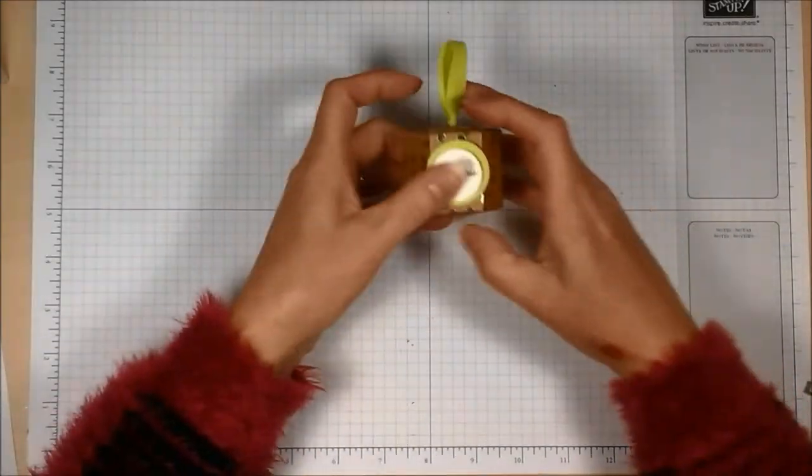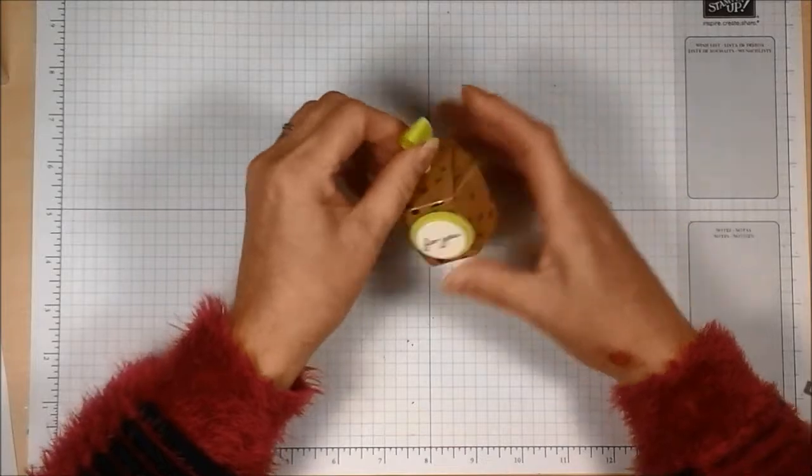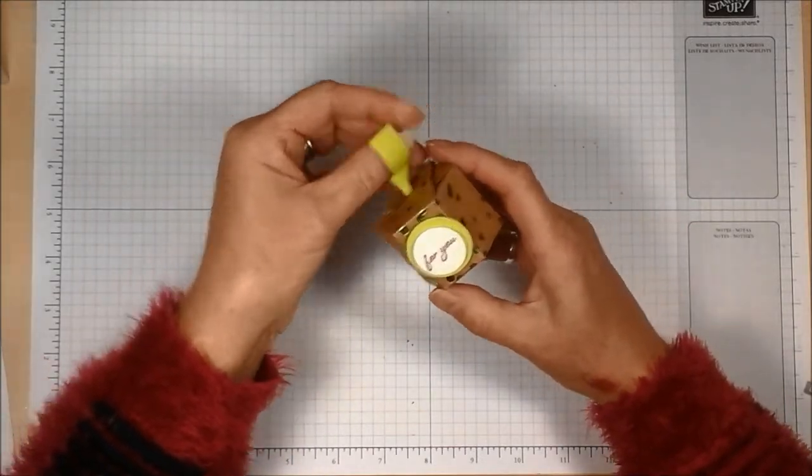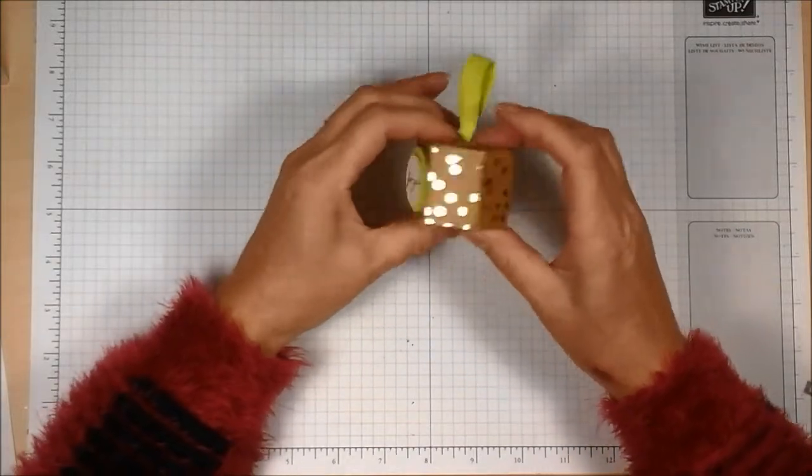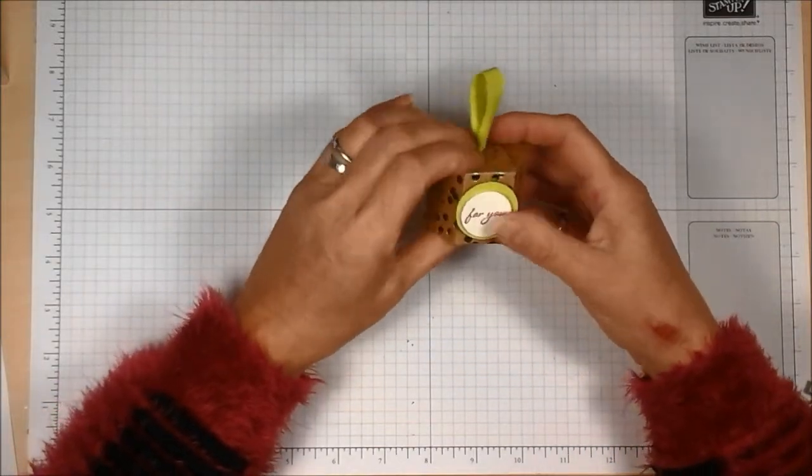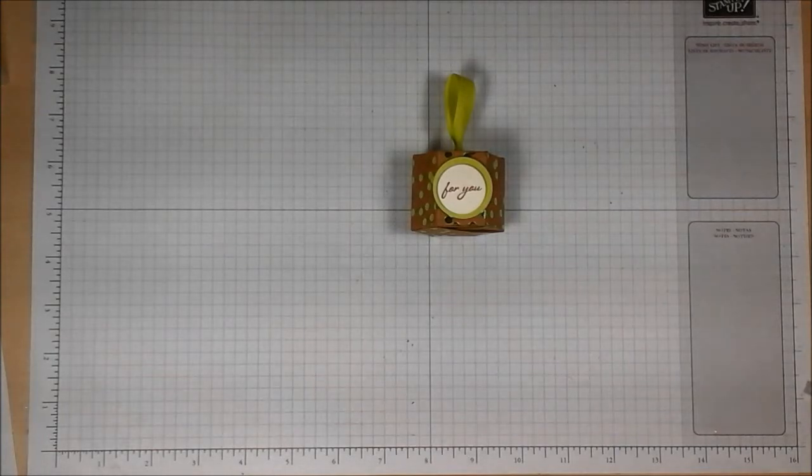And there we have it. A little hexagonal box held closed by the ribbon that's holding it up. That can be used to hang on a tree. And it holds four Hershey nuggets. So I hope that's been interesting. Hope that's been fun. And I'll speak to you again soon. Bye bye.